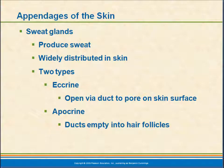We have other types of glands, which are sweat glands. These produce sweat and are located all over the skin. There are two types: eccrine and apocrine. Eccrine glands are active early on and continue throughout life. They open via duct to the pore on the skin. The apocrine also have ducts that empty into hair follicles.